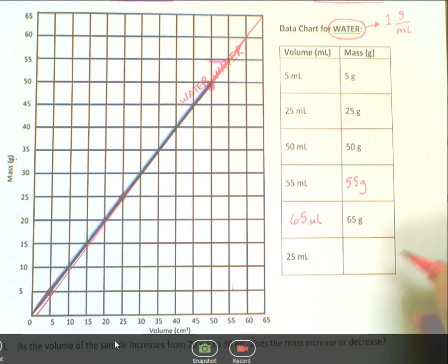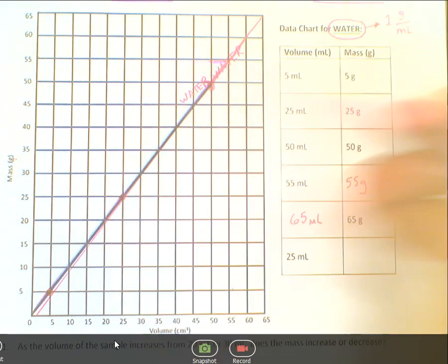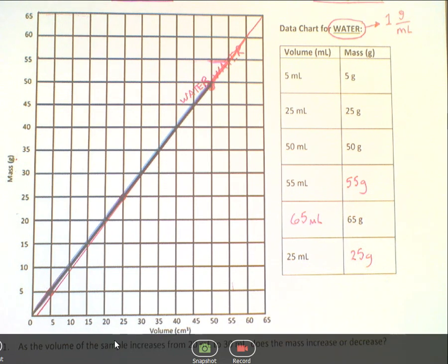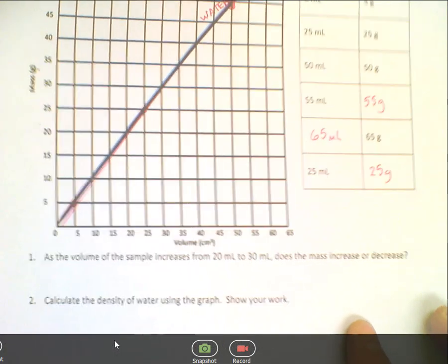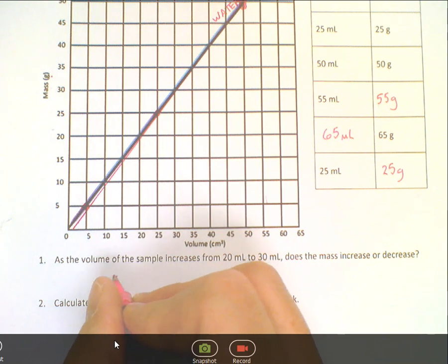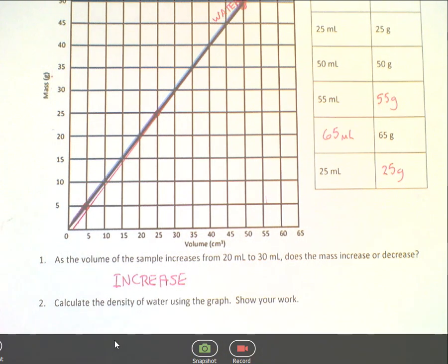How about if we had 25 milliliters? I think you could guess. Think about it. 25 milliliters, if you go up, touch the line, come across, you would see it's 25 grams. The next question says, as the volume of the sample increases from 20 to 30, does the mass increase or decrease? Well, if we're increasing by 10 milliliters, the mass will clearly increase by 10 grams in this case.